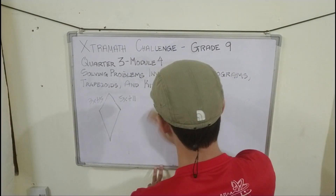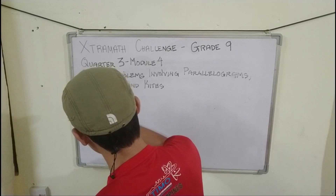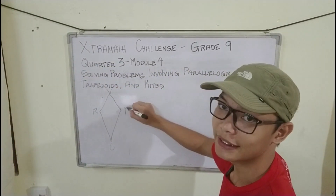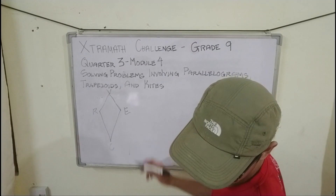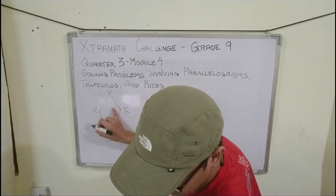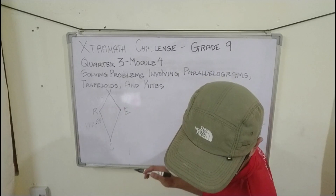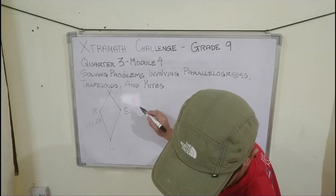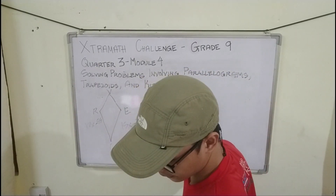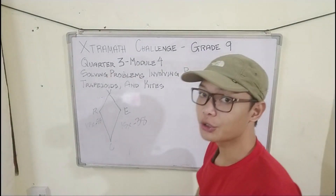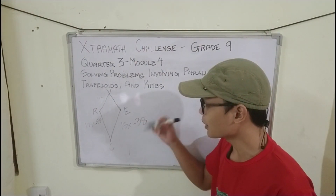Now, let's name our kite illustration as kite CRBE. It is given that side CR has a length of 17x − 55, and CE has a length of 15x − 38. The question is: what is the length or measurement of CR?